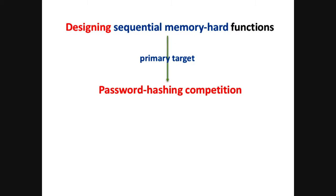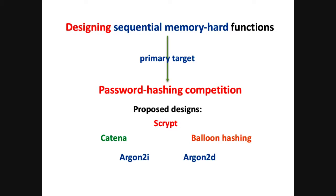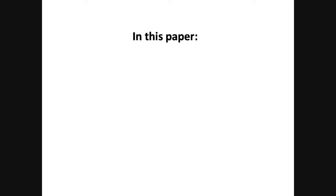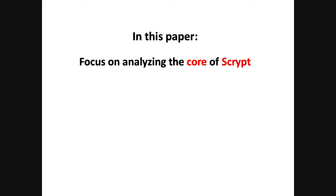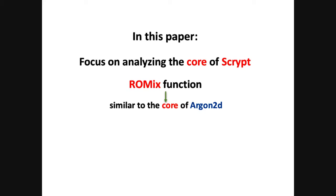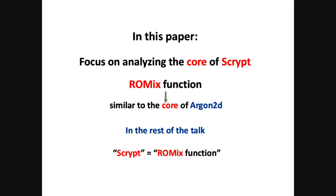Designing a sequential memory hard function has been a very important goal, and it is now the primary target for password hashing. There are many proposed designs: for example, S-Crypt, Catena, Argon2i, Argon2d, and balloon hashing, and probably more. But very few of these schemes have a good proof of security. In this paper, we focus on analyzing the core component of S-Crypt called the ROMIX function, and give a better security analysis. The ROMIX function is also very similar to the core component of Argon2d. In the rest of the talk, I will use S-Crypt and ROMIX function interchangeably.